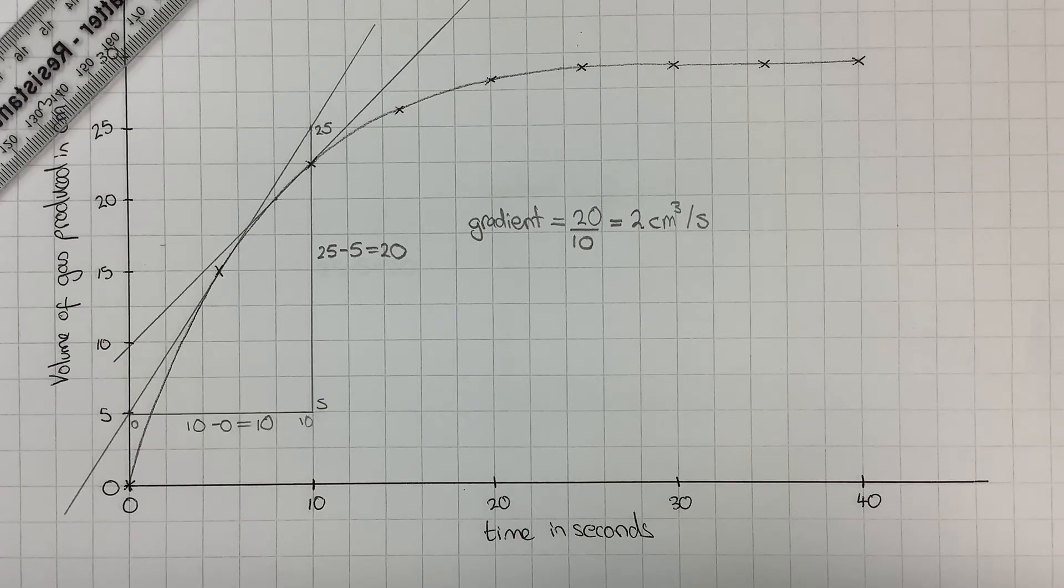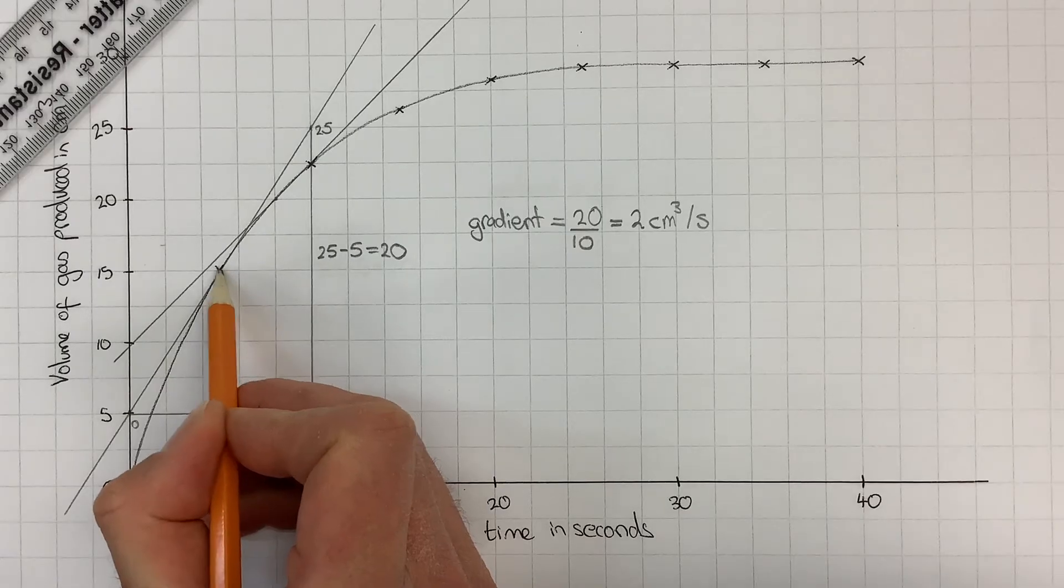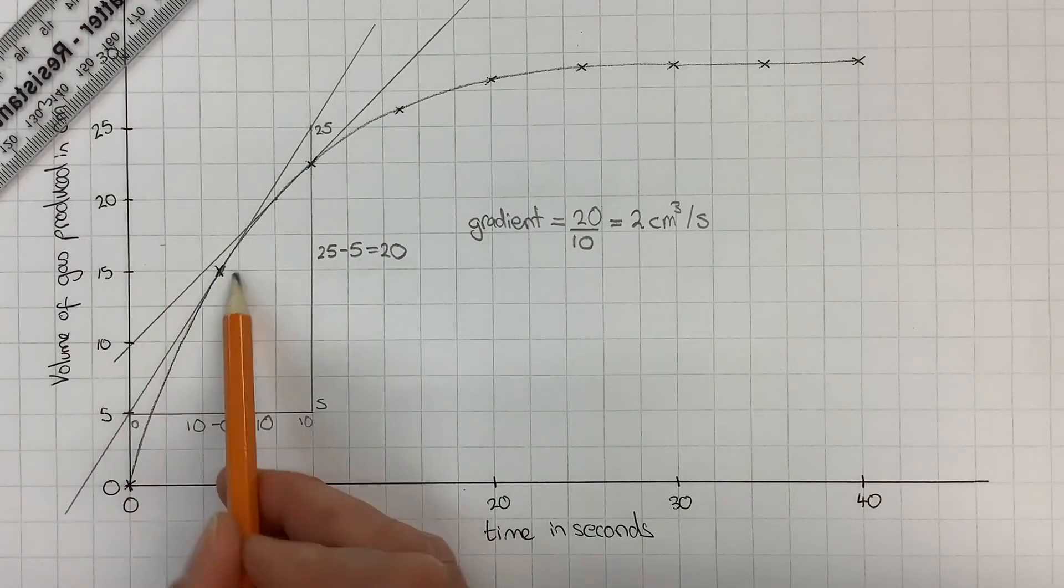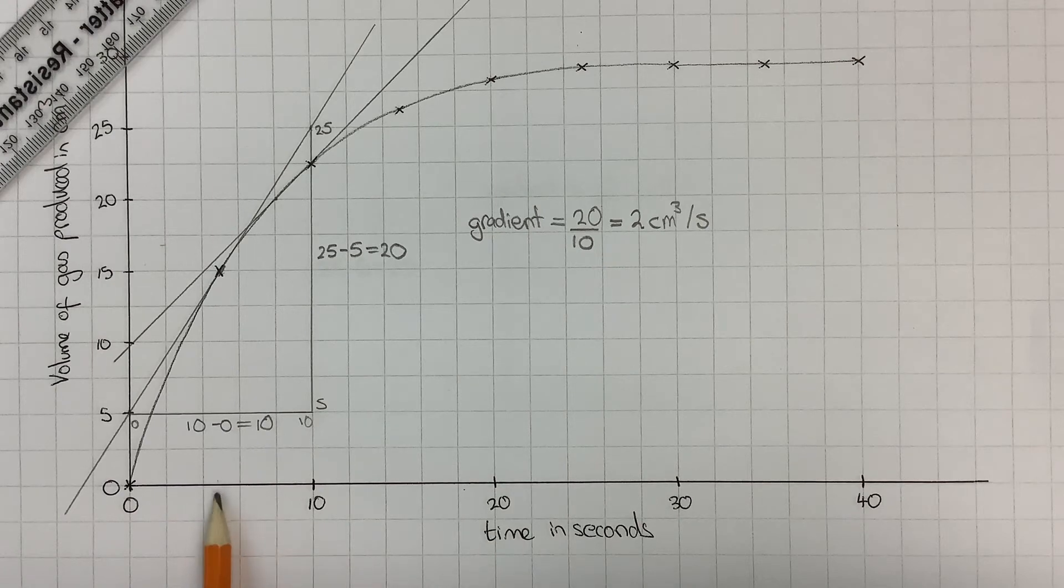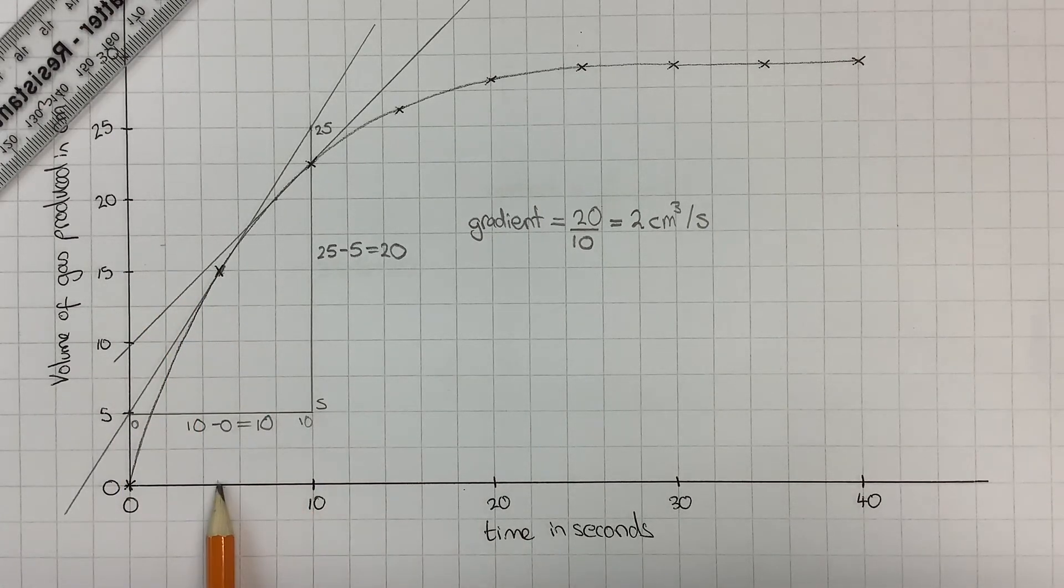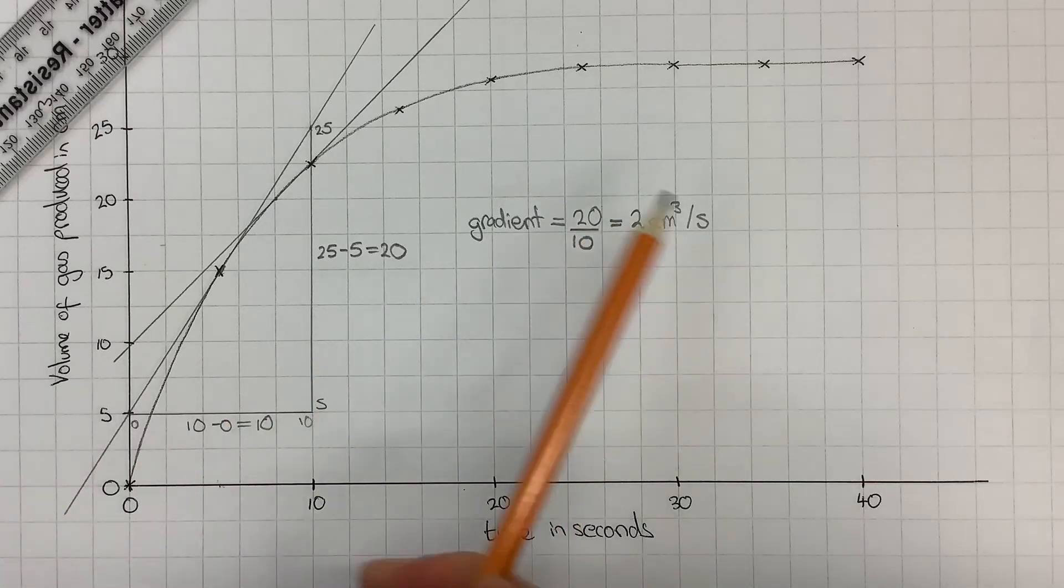A common mistake is when people want to work out the rate of reaction, they just read off the point, which for this one would be 15 and 5 seconds, and just do 15 divided by 5, which would give 3. We've seen that the answer is 2.